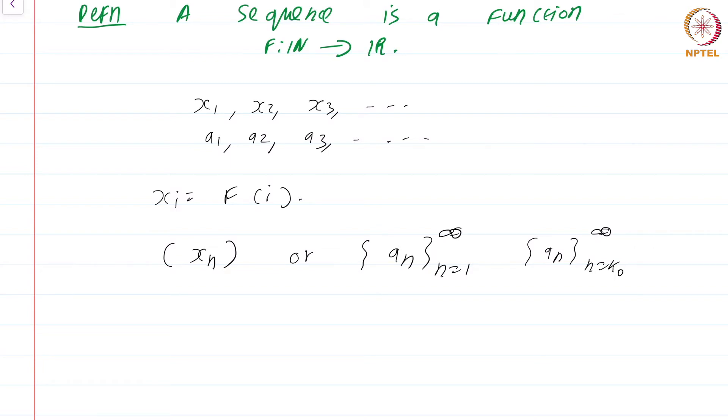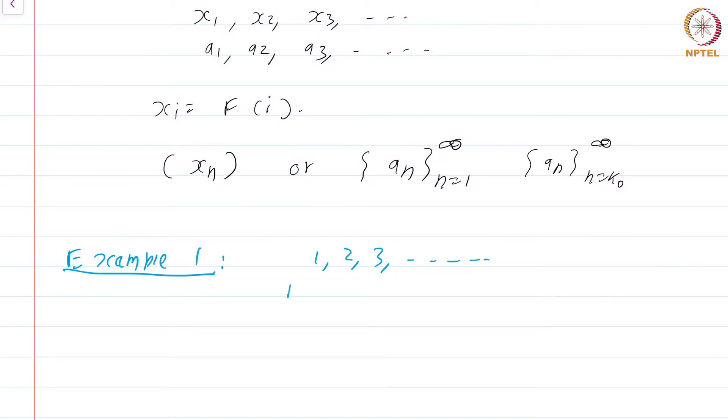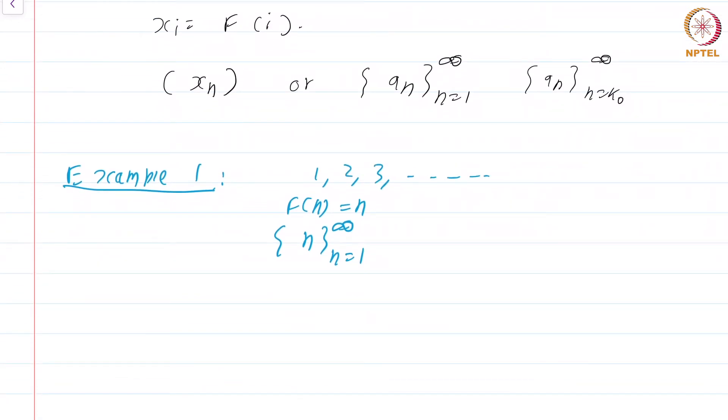Let us see some examples of sequences. Example 1: Consider the sequence 1, 2, 3, dot dot dot. If you want to be ultra precise, this is the sequence defined by f(n) equal to n. This is a sequence of real numbers that is ever increasing. Clearly it does not tend to a point on the real line, but in an intuitive sense this sequence seems to converge to the point infinity, though infinity is not a point on the real line. These are sequences that diverge to infinity. Let me give another example which is more relevant.